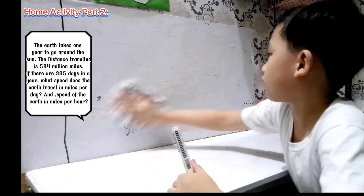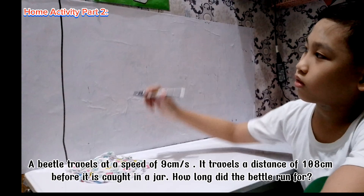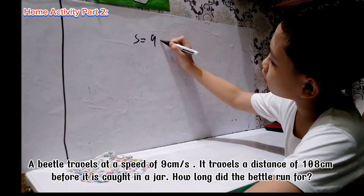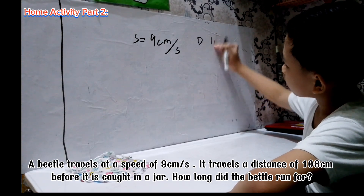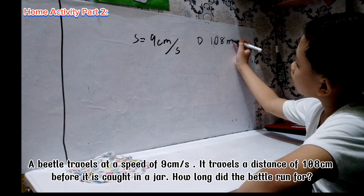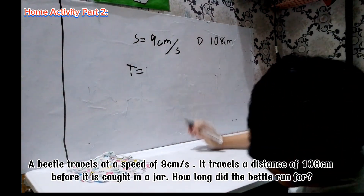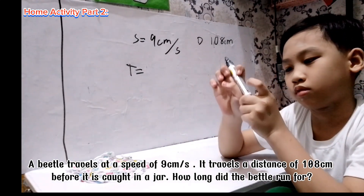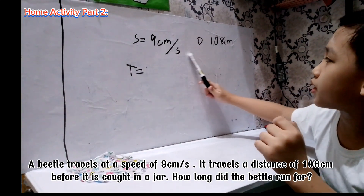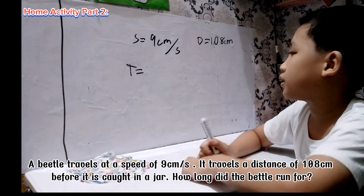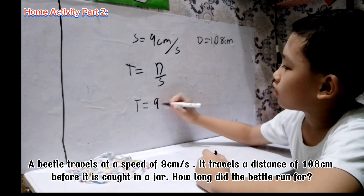Last one. A beetle travels at a speed of 9 cm per second. It travels a distance of 108 cm before it is caught in a jar. How long did the beetle run for? You are asked to find time. Speed is 9 cm per second and distance is 108 cm. The formula for time is dividing distance by speed.